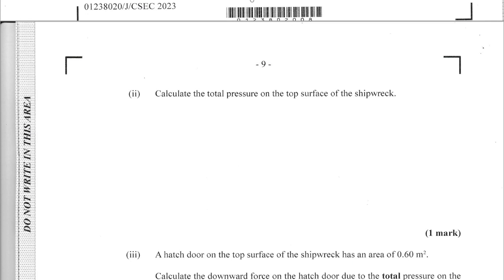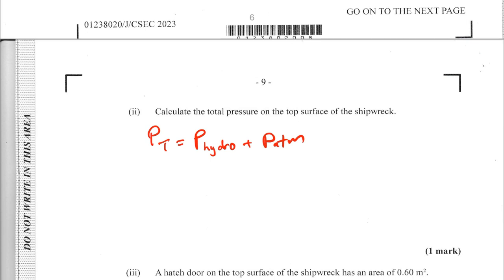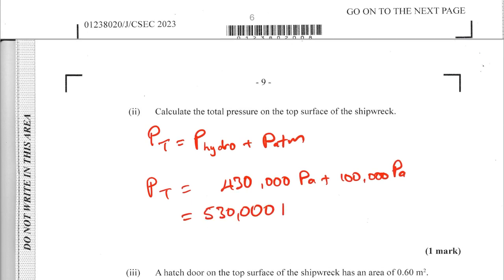Let's calculate the total pressure on top of the shipwreck. Using P = ρgh with density 1025 kg/m³, g = 10 N/kg, and depth 41.95 m, we get the hydrostatic water pressure of 430,000 pascals. Adding the atmospheric pressure of 100,000 pascals (100 kPa), the total pressure is 530,000 pascals.